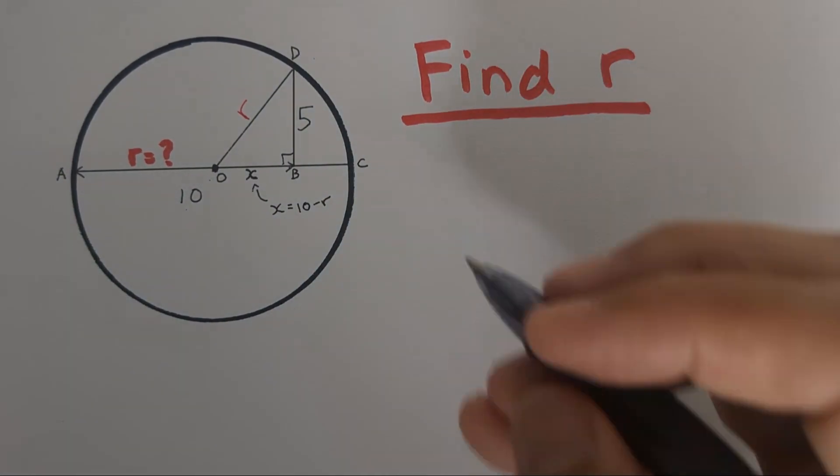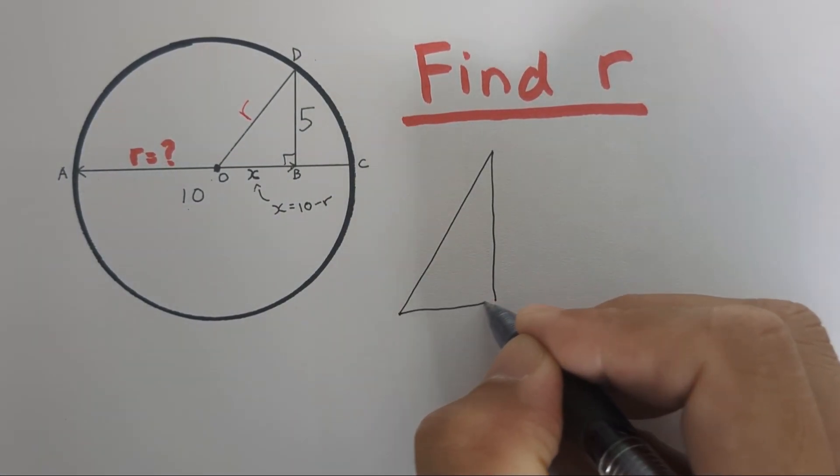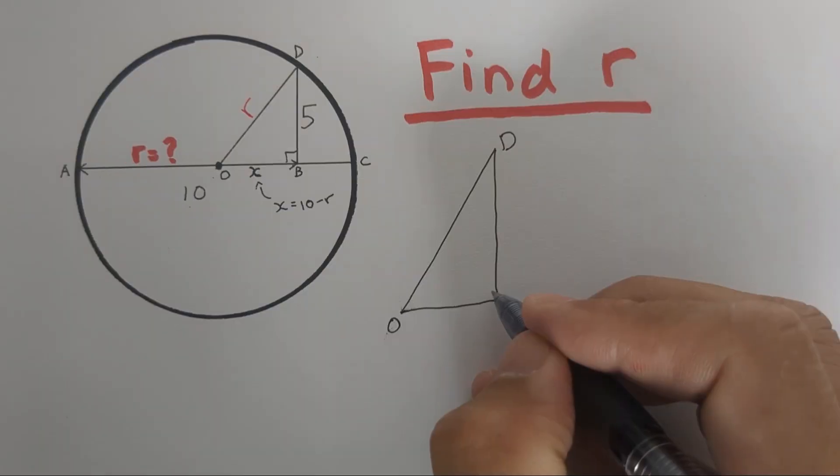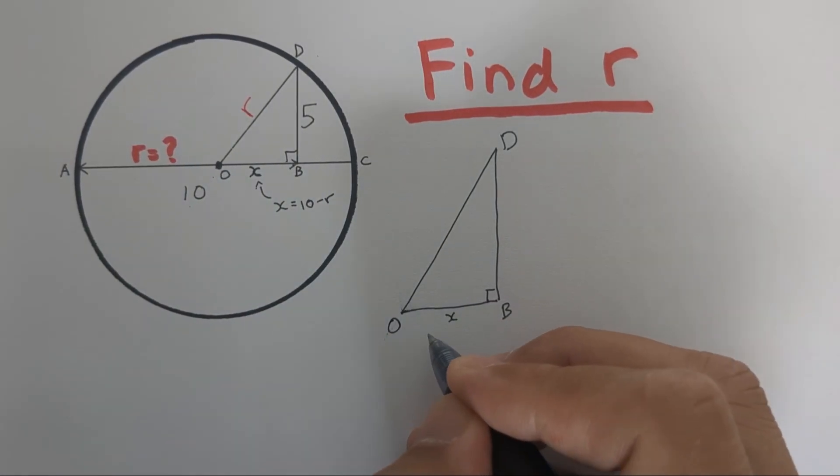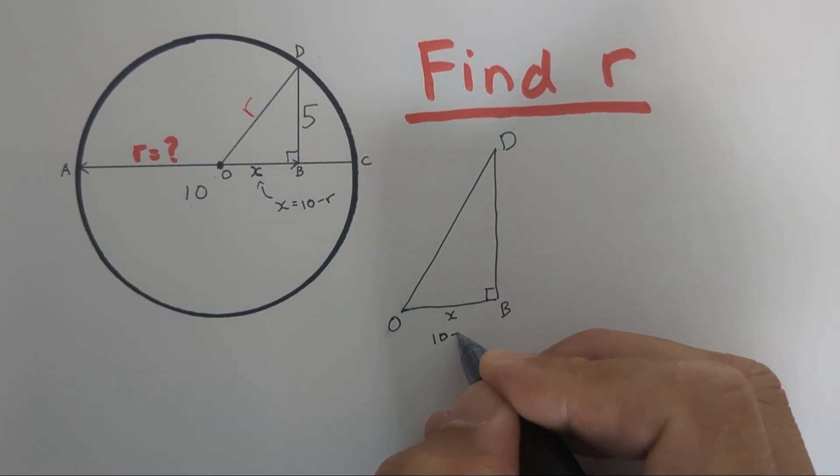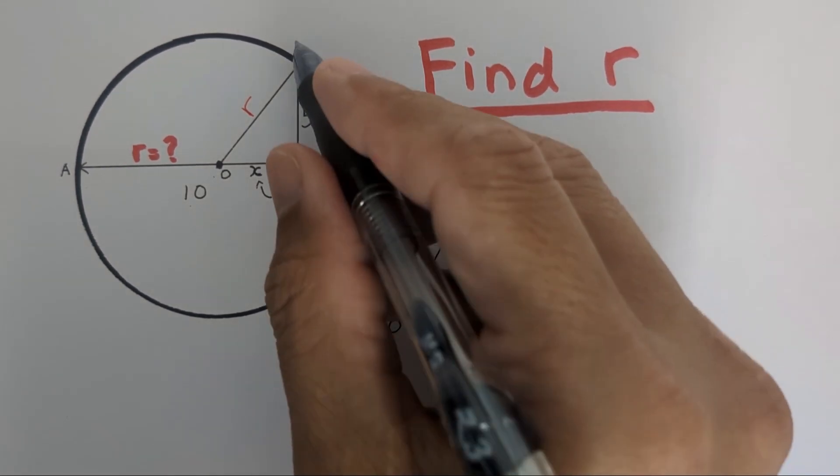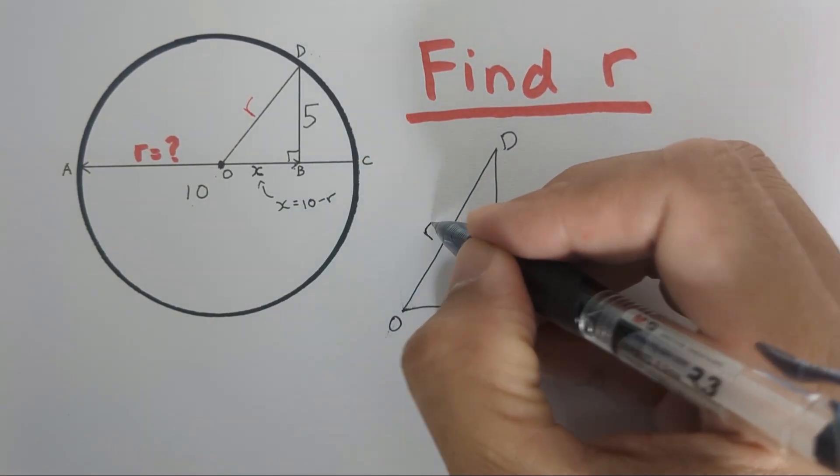Now we will have a Pythagorean theorem problem. This is the triangle extracted: O, B, D. OB is X, also called 10 minus R. BD is 5. OD is R.